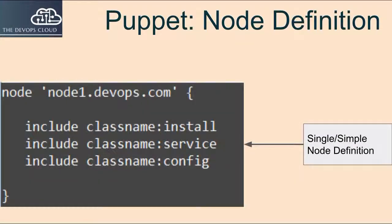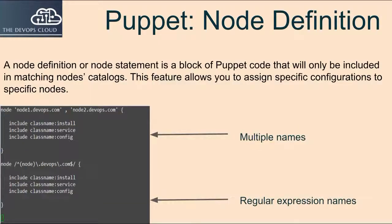A simple or single node definition example shows that node1 will have the Java install class and Tomcat install and service classes. In a group definition, multiple nodes can be assigned on the same line if all servers are of the same role, like a Tomcat web server.